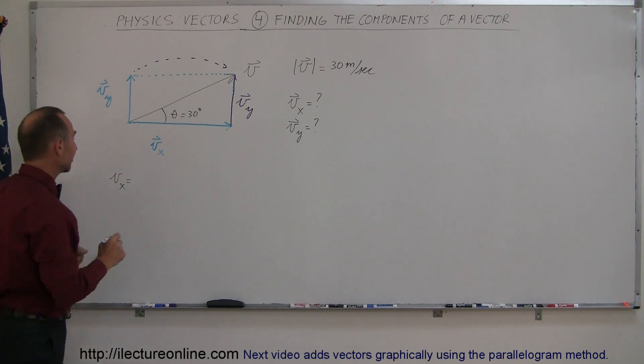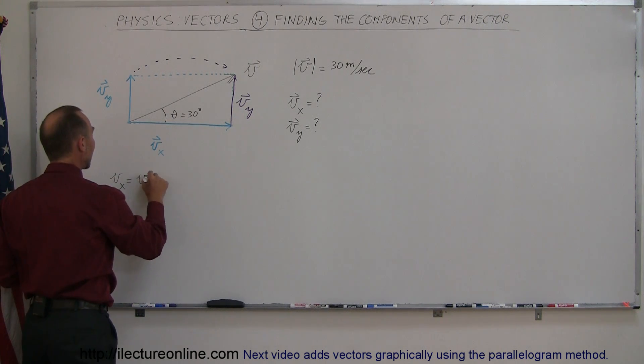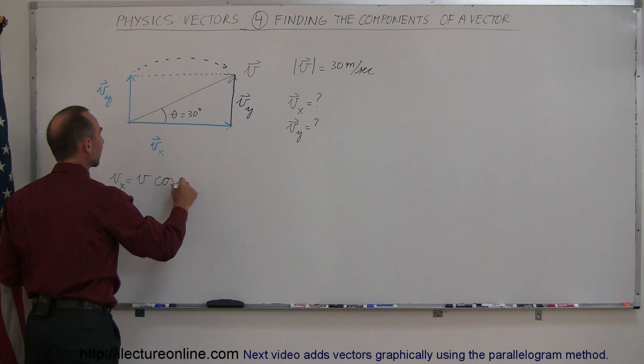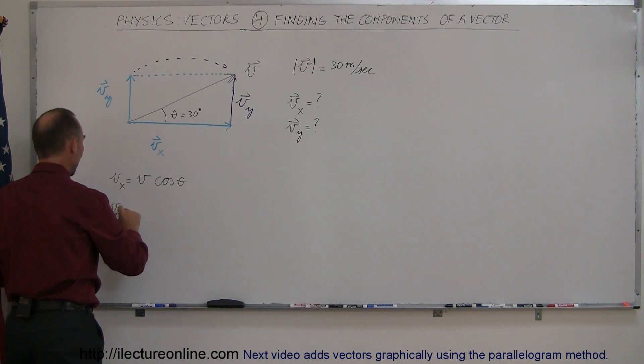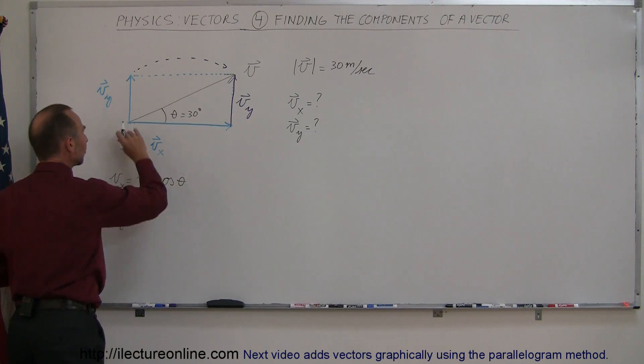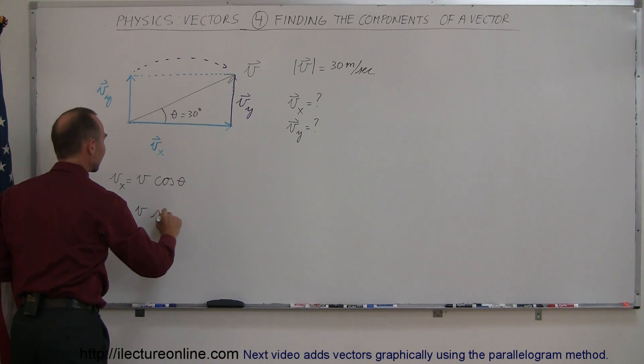So since it's the adjacent side, I can say that v sub x is equal to the hypotenuse v times the cosine of the angle theta. Likewise, I can say that v sub y is equal to v which is the hypotenuse times the sine of theta.